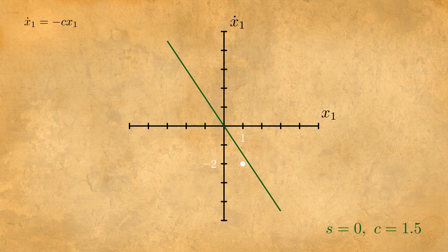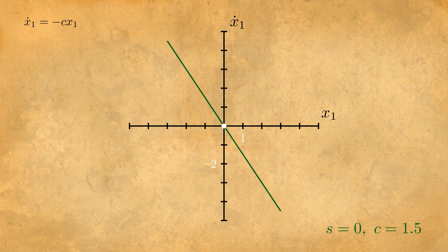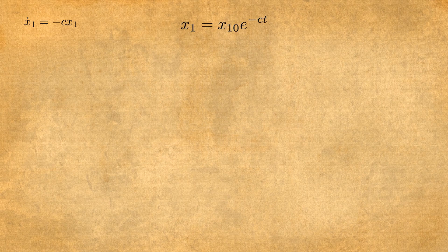If a point is at the coordinate 1 minus 2, with time it goes to this line and slides along to reach the origin. That's what's sliding. Hence the solution is x1 equals x10 exponential minus ct.